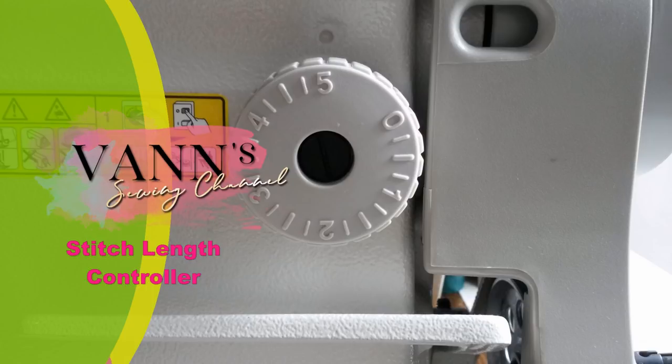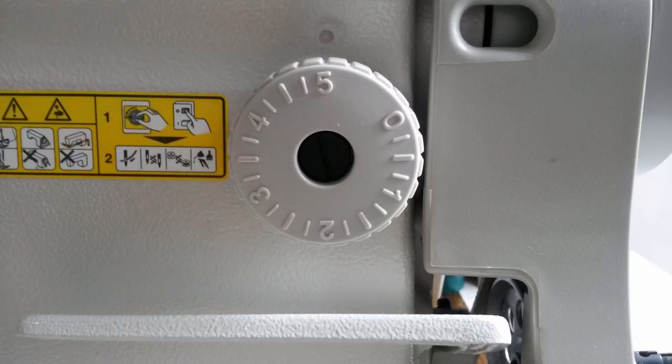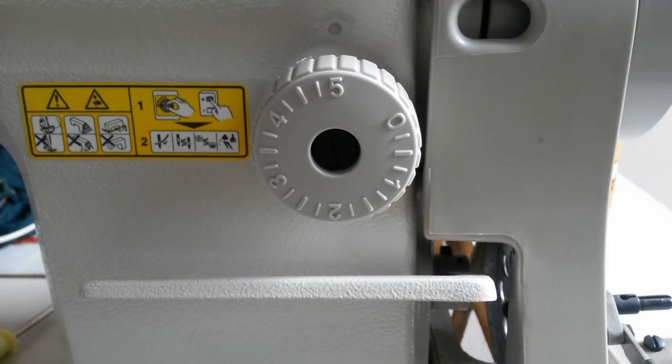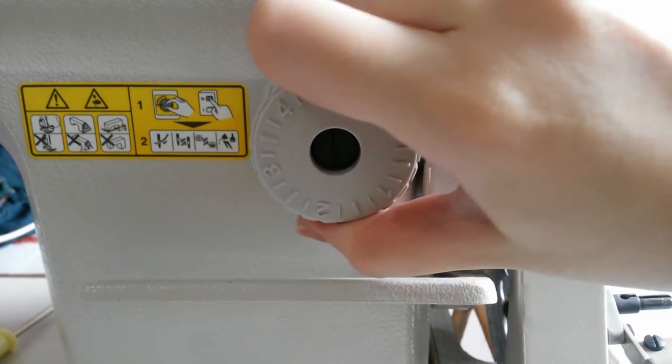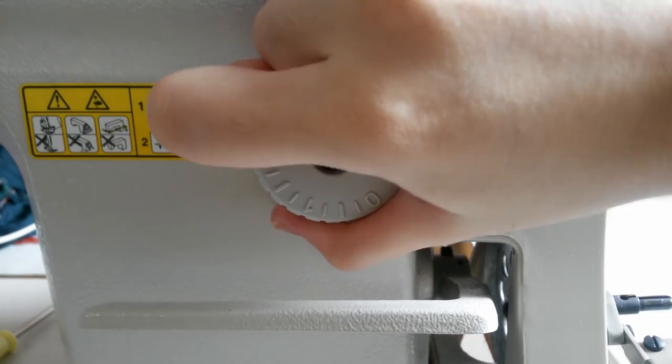Another feature we also have is the stitch length controller. This controller sets how long you want the stitches to be. One is the shortest, five is the longest. For normal sewing, I usually use 2.5 or 3.